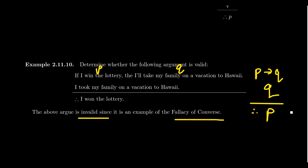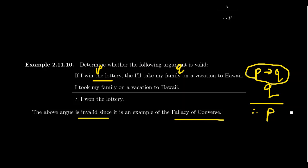There could be other reasons why I took my family to Hawaii. Maybe I didn't win the lottery — maybe my great aunt Ruth died and left me a lot of money. In which case I celebrate by taking my family to Hawaii. Whatever the reason, there could be other explanations for the vacation to Hawaii that don't necessarily come from winning the lottery. The fallacy of converse is essentially assuming a conditional statement P implies Q is logically equivalent to its converse Q implies P — that is not the case.